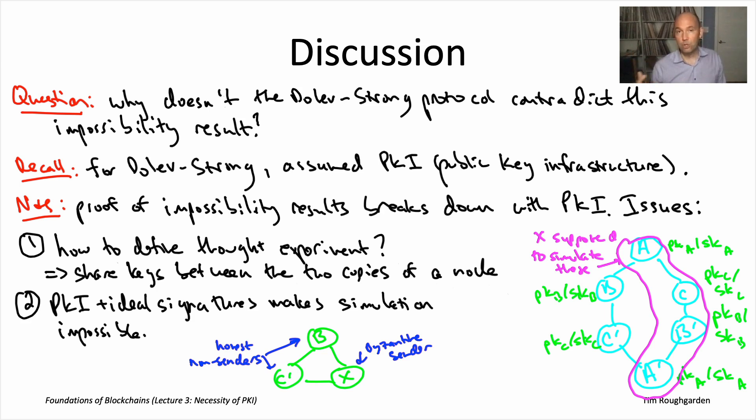So the question now is, does this Byzantine node X in the green triangle, does it have sufficient information to carry out the simulation that the proof requires? And if we look at it, we see that the answer is no. Okay? So what does the Byzantine node capital X know in the green triangle with the PKI assumption? Okay, so everybody knows everybody's public keys: B, C prime, X, their three public keys are common knowledge.